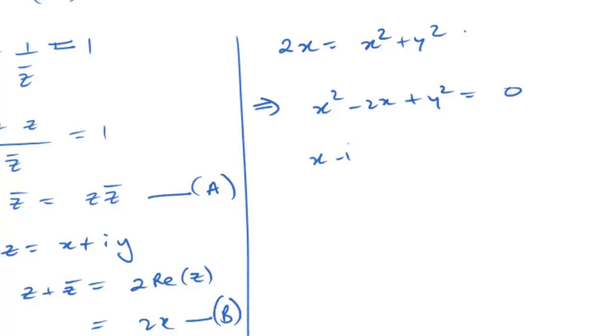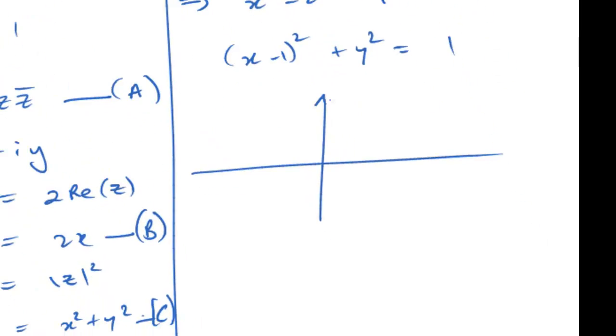Upon completing the square, we get this equation, which is, if you were to describe the locus, which is best done by a quick sketch, your imaginary Z axis, your real Z axis.